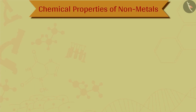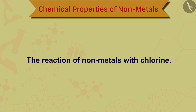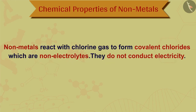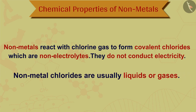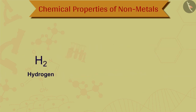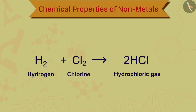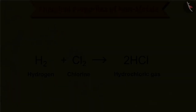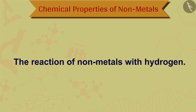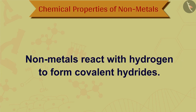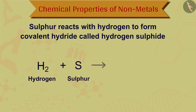The next reaction is the reaction of non-metals with chlorine gas. Non-metals react with chlorine gas to form covalent chlorides which are non-electrolytes. They do not conduct electricity. Non-metal chlorides are usually liquids or gases. For example, hydrogen reacts with chlorine to form hydrochloric gas. The last reaction is the reaction of non-metals with hydrogen. Non-metals react with hydrogen to form covalent hydrides. Sulfur reacts with hydrogen to form a covalent hydride called hydrogen sulfide.